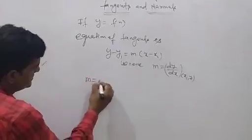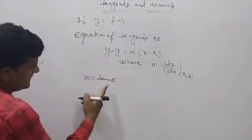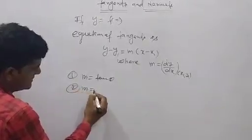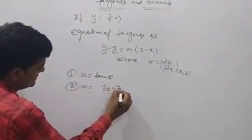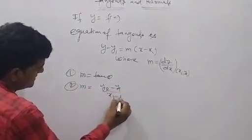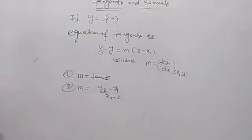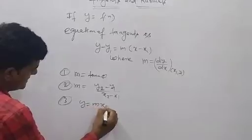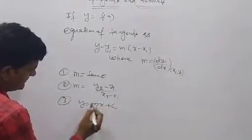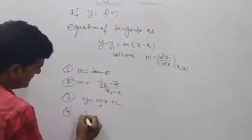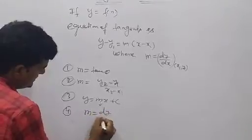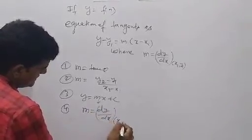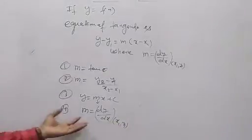Slope means m is equal to — if the angle is given, then m is equal to tan(θ). If points are given, m is equal to (y2 minus y1) upon (x2 minus x1). Third: if y is equal to mx plus c, then m is just the slope here. Fourth: m is equal to dy/dx at (x1, y1) if a curve is given.